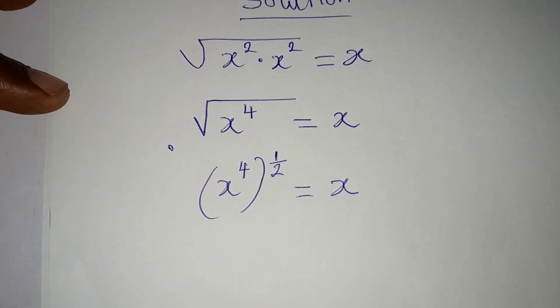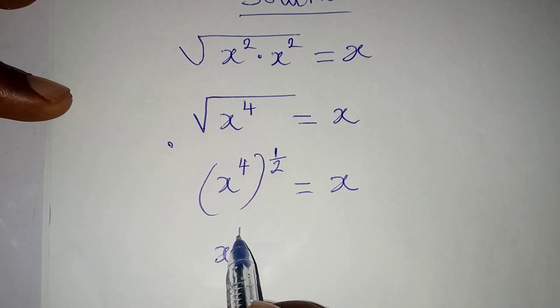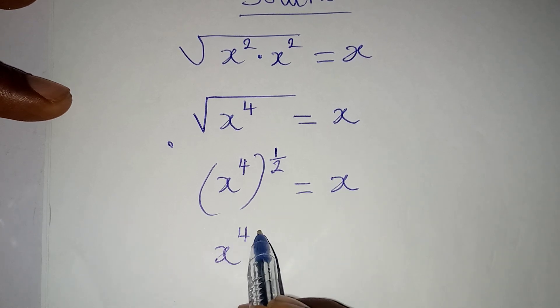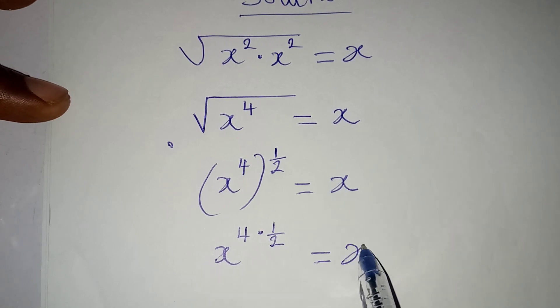The next thing I will do is to open these brackets. So I have x to the power of 4 multiplied by 1 over 2, which is equal to x.